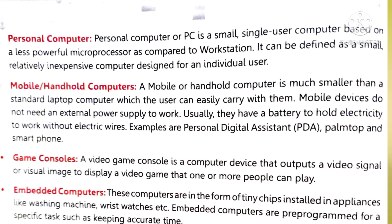Next is embedded computers. These computers are in the form of tiny chips installed in appliances like washing machines and wrist watches. Embedded computers are programmed for specific tasks such as keeping accurate time. An embedded computer system is a dedicated computer system designed for only one particular task. An embedded system is a combination of software and hardware — the name 'embedded' means one thing is connected to another, like software connected to a hardware system, as in a washing machine where time is set through software.